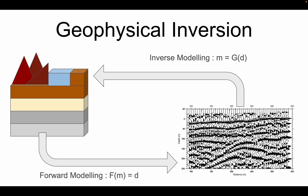If we try to understand geophysical inversion in the form of a picture, we have this measured dataset. In this case I'm showing a seismic section. What we do is assume a subsurface model whereby the subsurface can have inhomogeneities, it can have certain structures, there can be a U-shaped layer also.